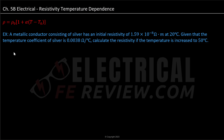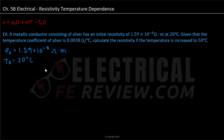Knowing that, we can also go ahead and note our given values. Our initial resistivity rho naught is equal to 1.59 times 10 to the negative eight ohms meters, at the initial temperature T0 equal to 20 degrees Celsius. And our temperature coefficient alpha is equal to 0.0038 ohms divided by Celsius.